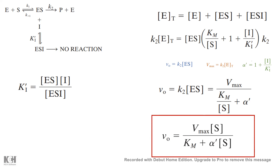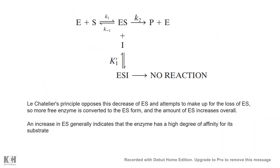Now we understand what alpha dash is — it is essentially a constant. Regarding how the Km of the reaction decreases: product formation is not happening, and most of the ES is getting converted to the enzyme-substrate-inhibitor complex. As a result, the concentration of ES is decreasing. But according to Le Chatelier's principle, the equilibrium for this reaction shifts rightward, and more and more ES is formed. Kinetically, this appears as though the affinity of the enzyme toward the substrate has increased in the presence of this inhibitor — indicating a higher degree of affinity.